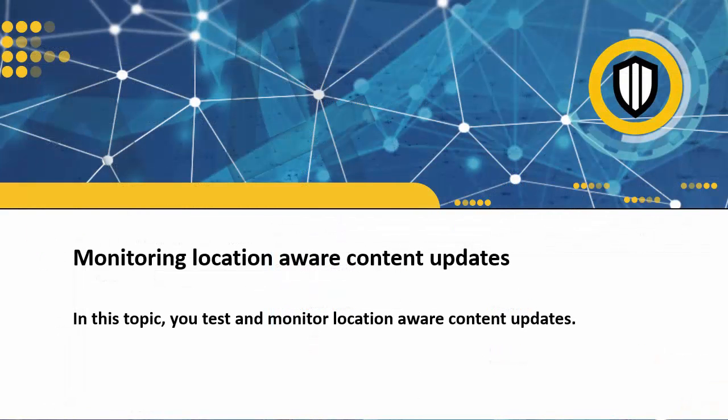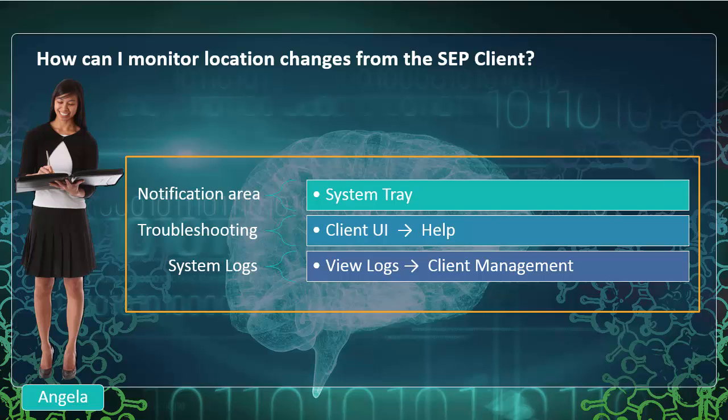SoluCell selected a machine in their environment on which to test new locations. There are several areas that Angela can monitor when testing location awareness. The first being the Notification area in the Windows system tray — a notification bubble displays when the SEP client switches to a different location. She can also review the troubleshooting window in the client UI, which contains information such as the associated client group, policy serial number, and management server. For more detailed information, she can also examine the system logs, which include events such as client server activity, content updates, and file reputation submissions.